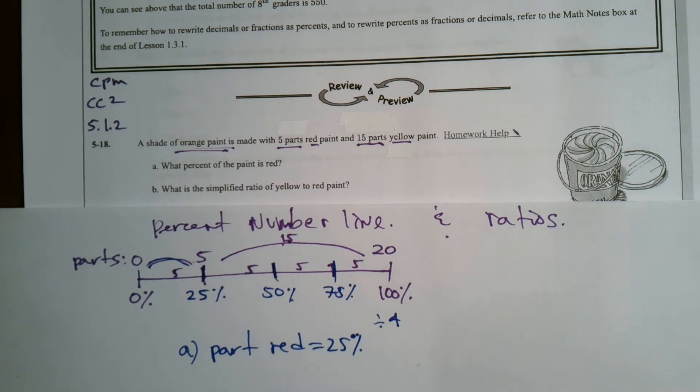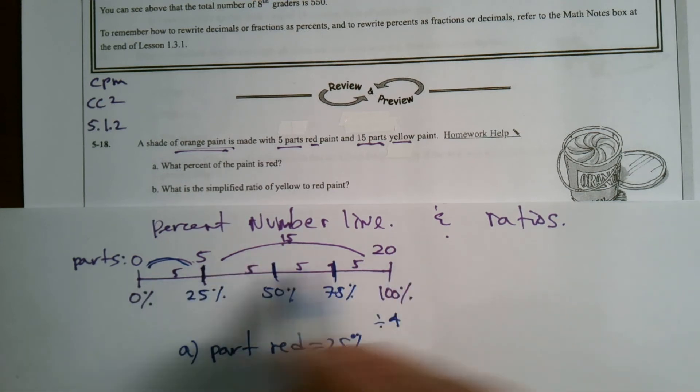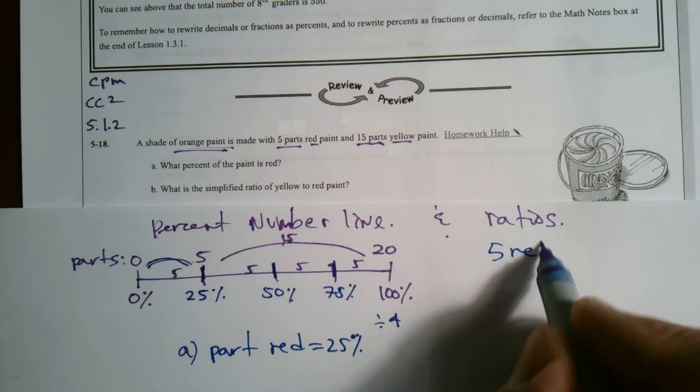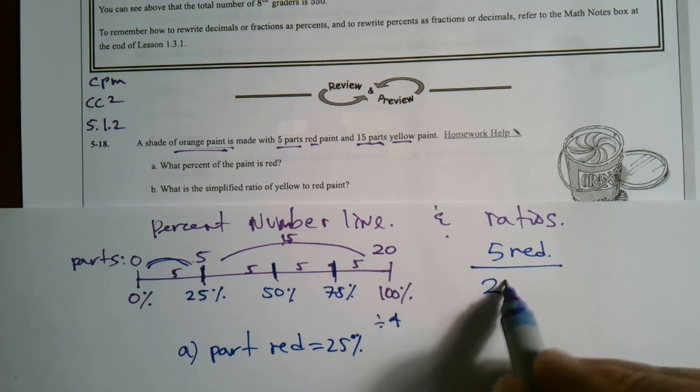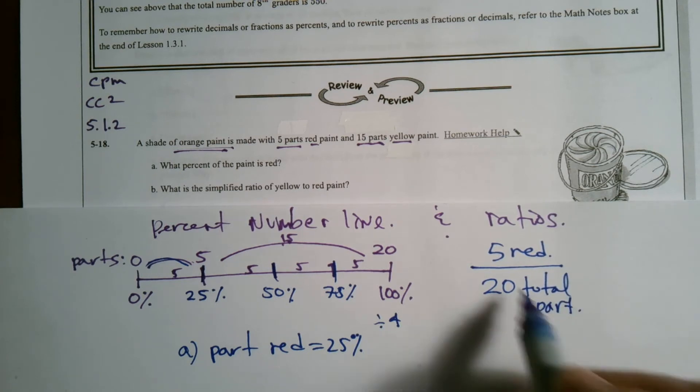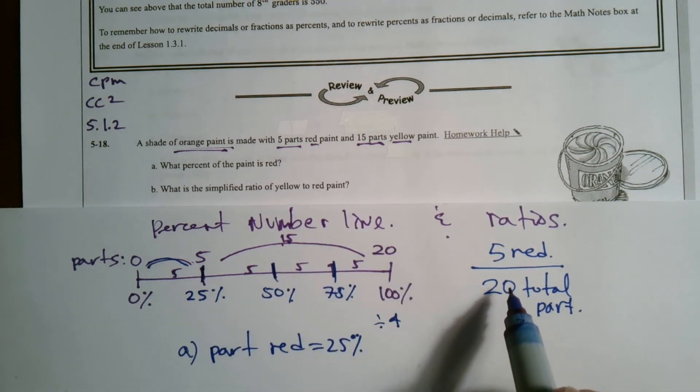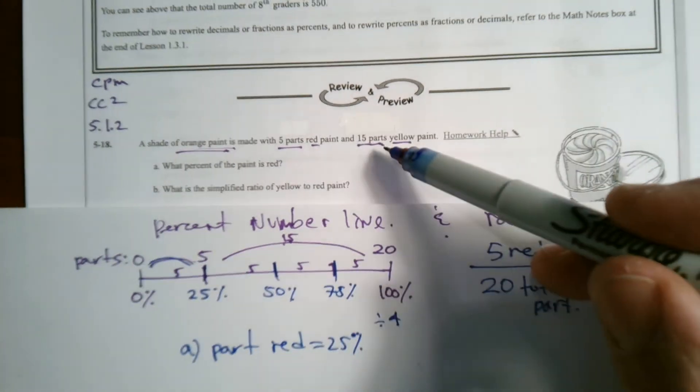And that's using the number line. But let's talk about how would I do this in ratios? If I wanted to do this using ratios, I would first think about what am I dealing with? I'm dealing with five parts red. What is my ratio? Five parts red to what? Twenty total parts.